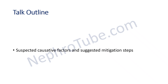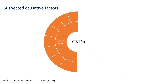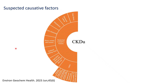The suspected causative factors of CKDU include heat stress, strenuous and aggressive work, dehydration, agrochemicals, heavy metals, and arsenic — all environmental factors related mainly to agricultural areas. Additional factors include polluted drinking water, agriculture using polluted water and soil, and other environmental exposures such as snake bites.